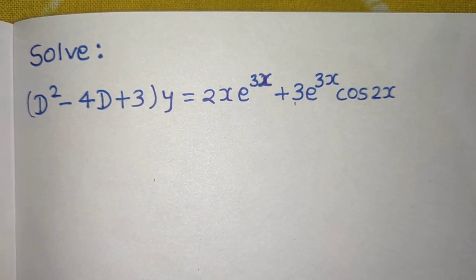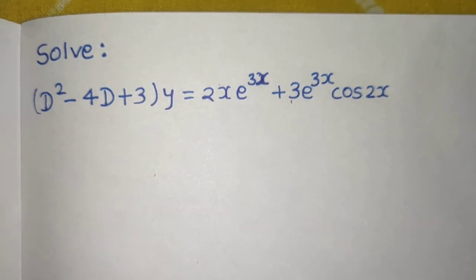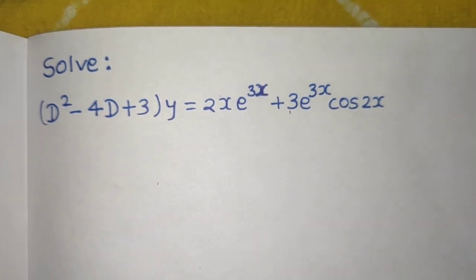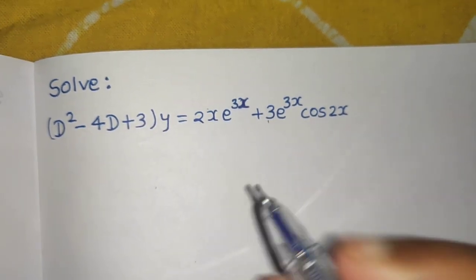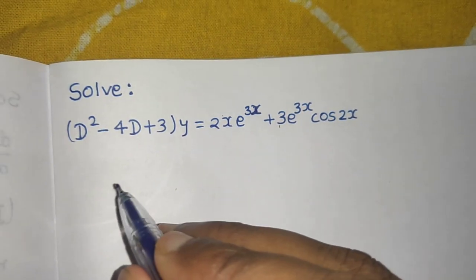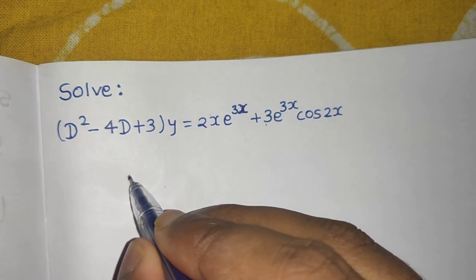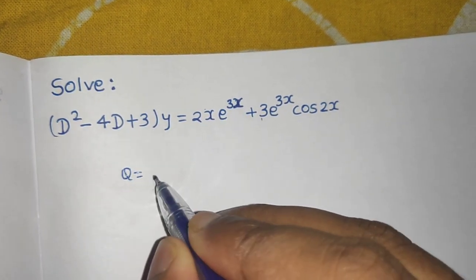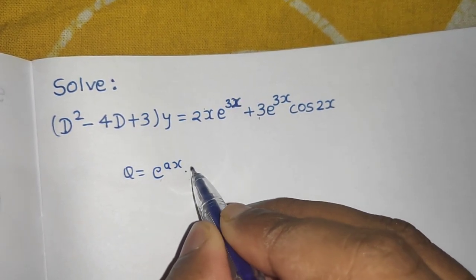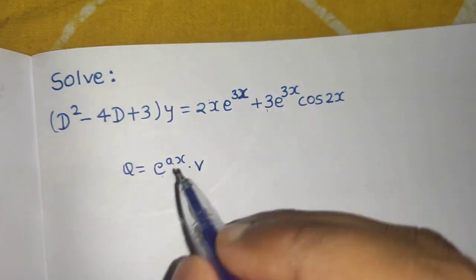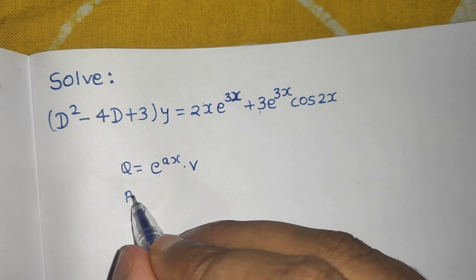Let's see one more question from linear differential equations with constant coefficients, since all the focus is on the RHS. Look at the RHS: e^(ax) times v. Remember that rule? Let's discuss that rule once more. If Q, which is your RHS, is e^(ax) times v, where v is any function of x, then what do we do for finding the particular integral?